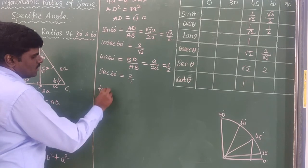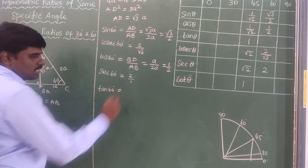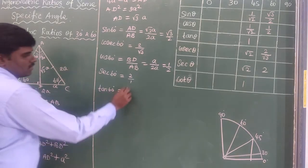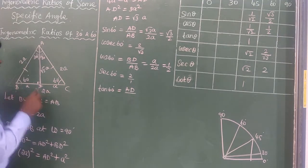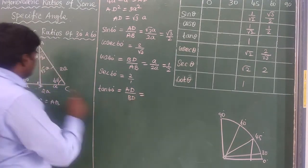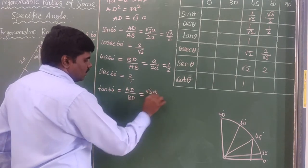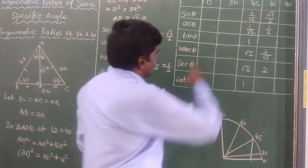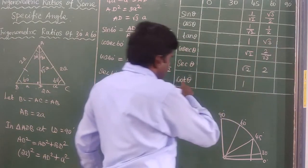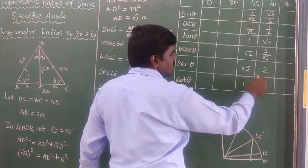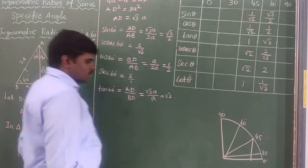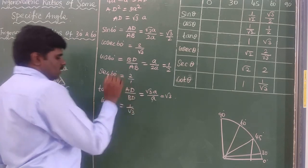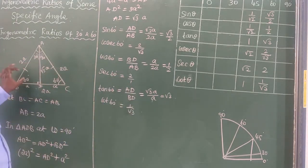Next, tan 60°. The formula for tan is opposite side divided by adjacent side. Opposite side is AD = √3·A, adjacent side is BD = A. Cancelling A, tan 60° = √3. Similarly, cot 60° is the reciprocal of tan, so cot 60° = 1/√3.